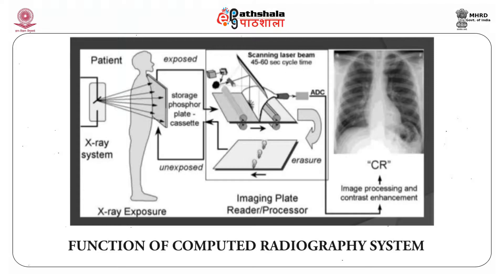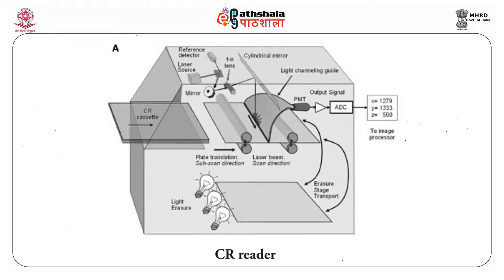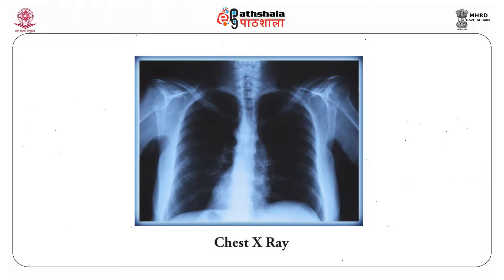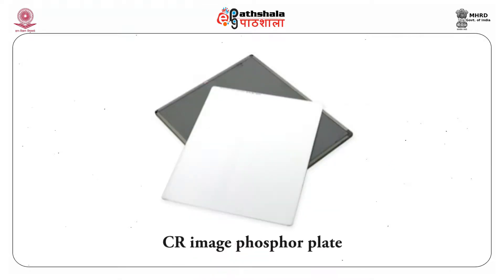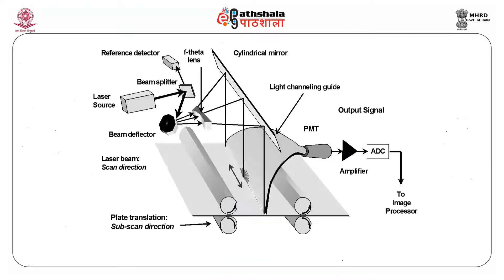This illustrates the function of a computed radiography system in a hospital scenario. You can see an x-ray tube, a patient, and the cassette. The CR reader converts the latent invisible image into a visible image — seen here as a chest x-ray. The main components of a computed radiography system are the image phosphor plate, the laser light used to stimulate the invisible image, and a photomultiplier tube to produce the digital image.